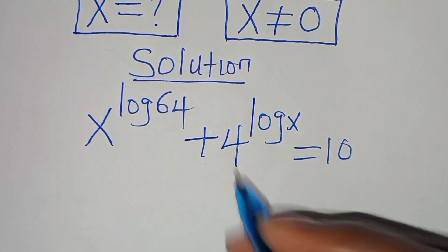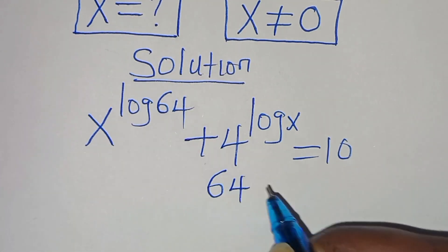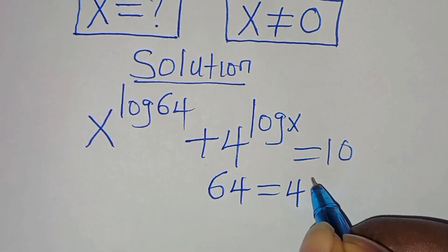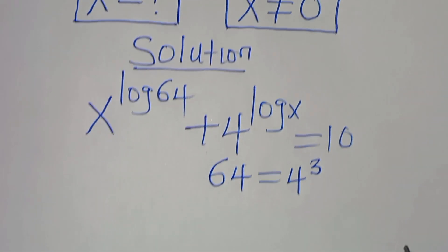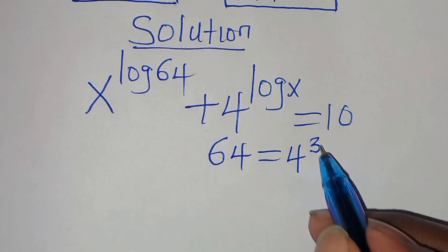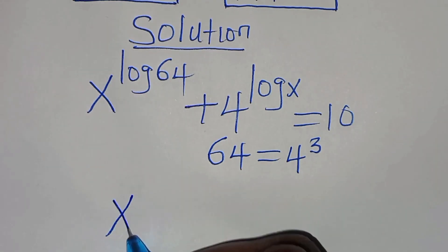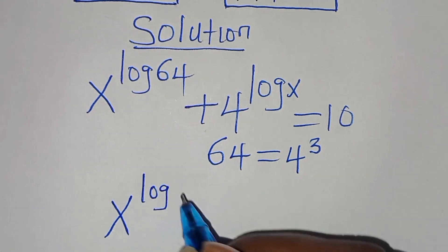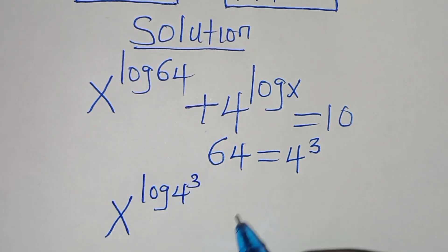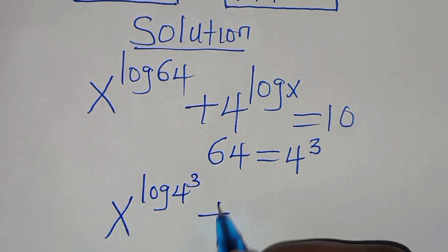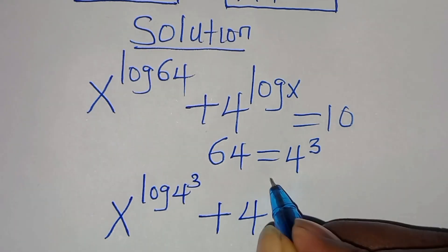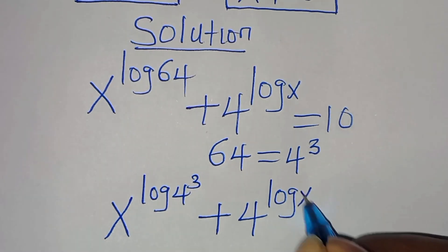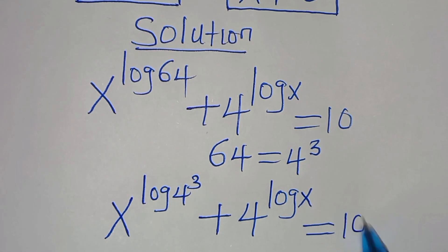We can express 64 as 4 to the power of 3. Substituting this, we have x to the power of log(4³), plus 4 to the power of log x, equal to 10.